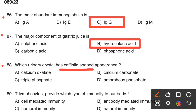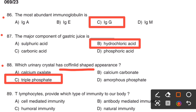Next question. Which urinary crystal has a coffin-lid shape appearance? Option A, Calcium oxalate. Option B, Calcium carbonate. Option C, Triple phosphate. Option D, Amorphous phosphate. The right answer is Option C, Triple phosphate. The crystal which has a coffin-lid shape appearance is triple phosphate.